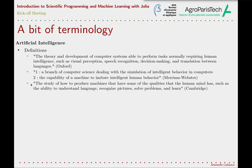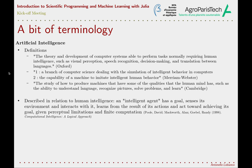Cambridge provides a heterogeneous list of examples: understand languages, recognize pictures, solve problems, learn. Going through all these definitions, the first consideration is that they are given in comparison to human intelligence. The problem then is to define what intelligence is — what represents an intelligent behavior.